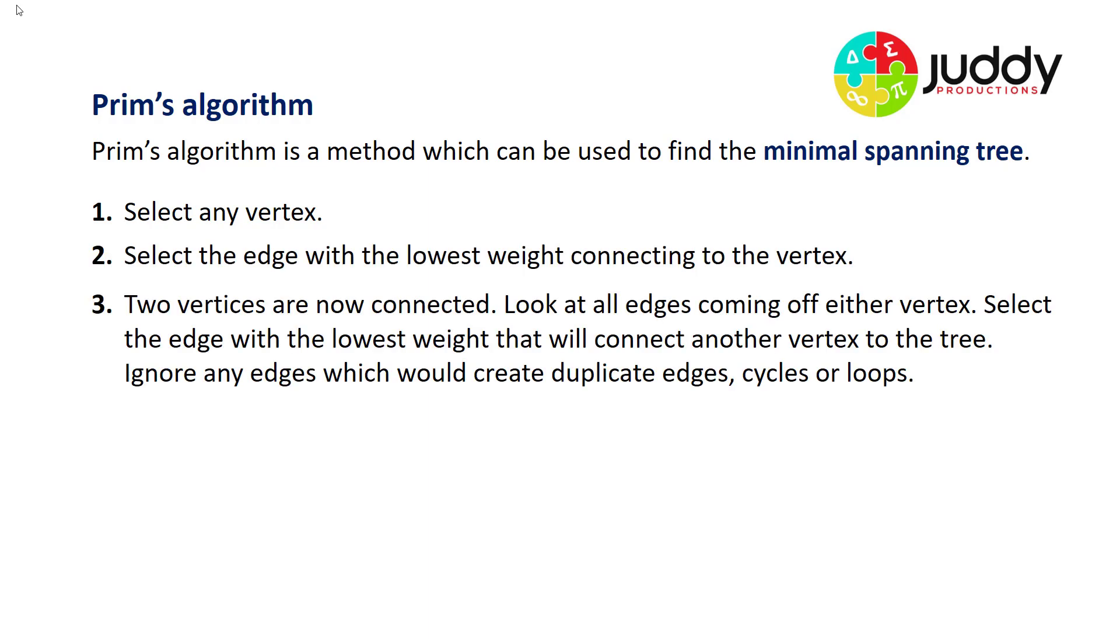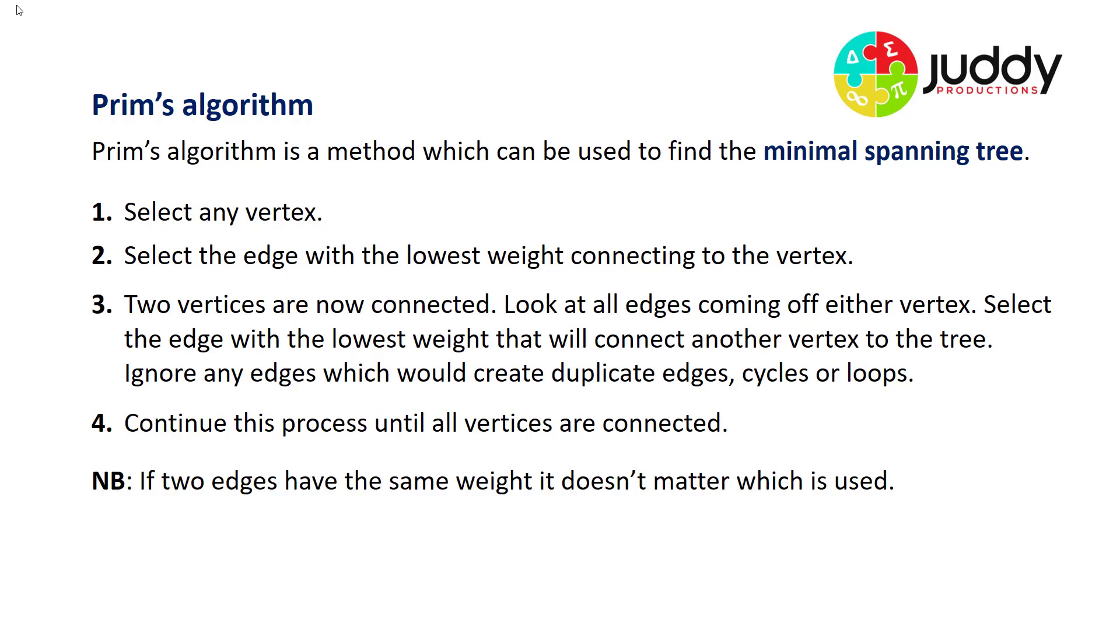Number three, we now have two vertices that are connected. Look at all edges coming off either vertex and select the edge of the lowest weight that will connect another vertex to the tree. Ignore any edges that would create duplicate edges, cycles, or loops. And four, continue this process until all vertices are connected. Now note, if two edges have the same weight, it doesn't matter which is used.